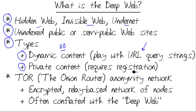Many people use the term deep web incorrectly. Strictly speaking, the deep web refers to the unindexed web. Within the unindexed web, we have sub-areas of the deep web.